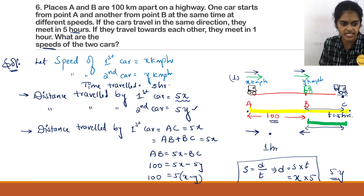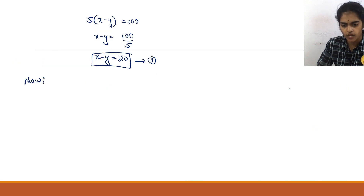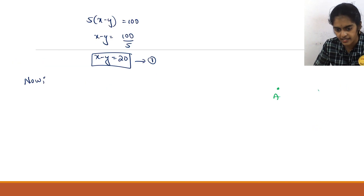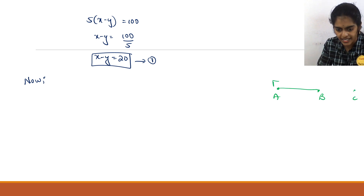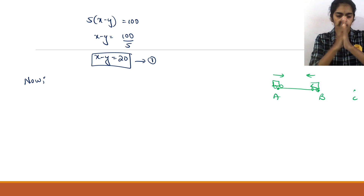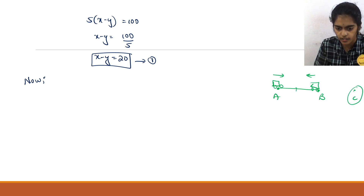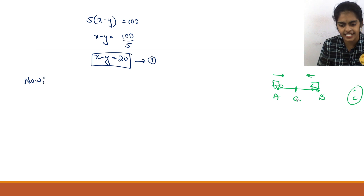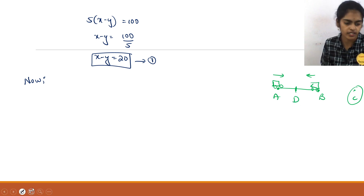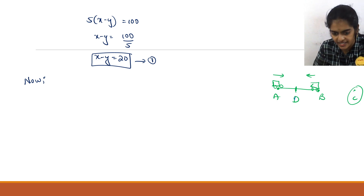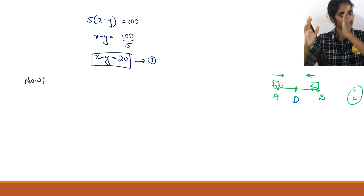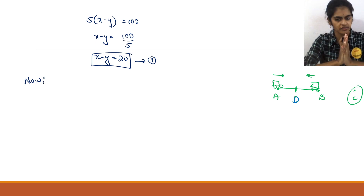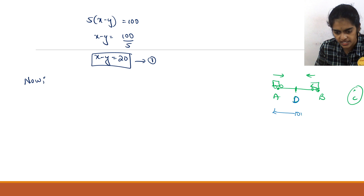Now the second condition: cars travel towards each other. In this case, points A and B are as before, and they meet at some point D in between. This car and that car are travelling towards each other, so they meet somewhere in the middle. The entire distance AB is still 100 km.